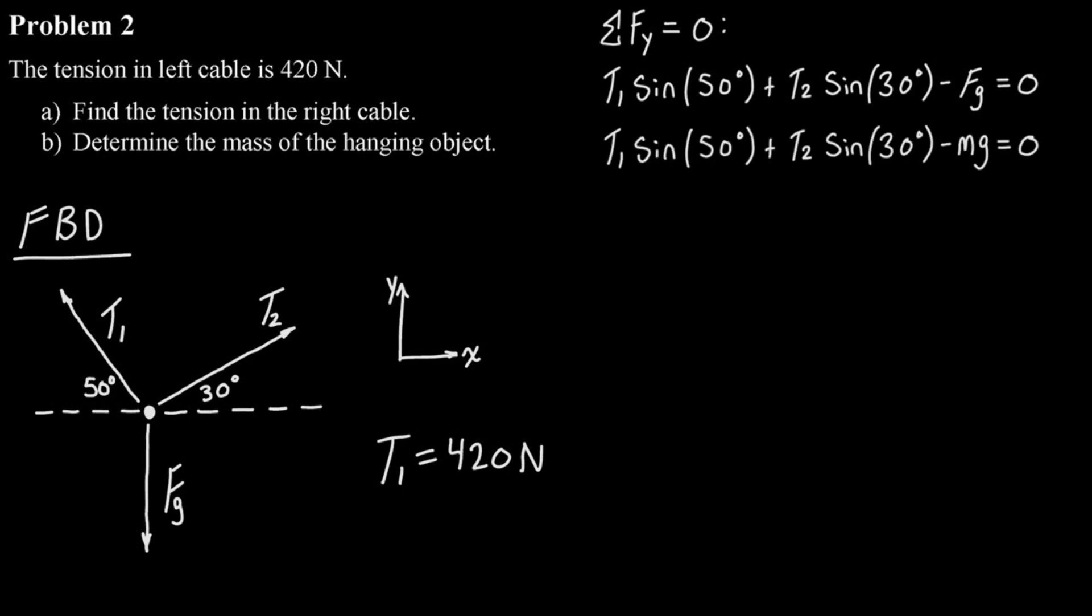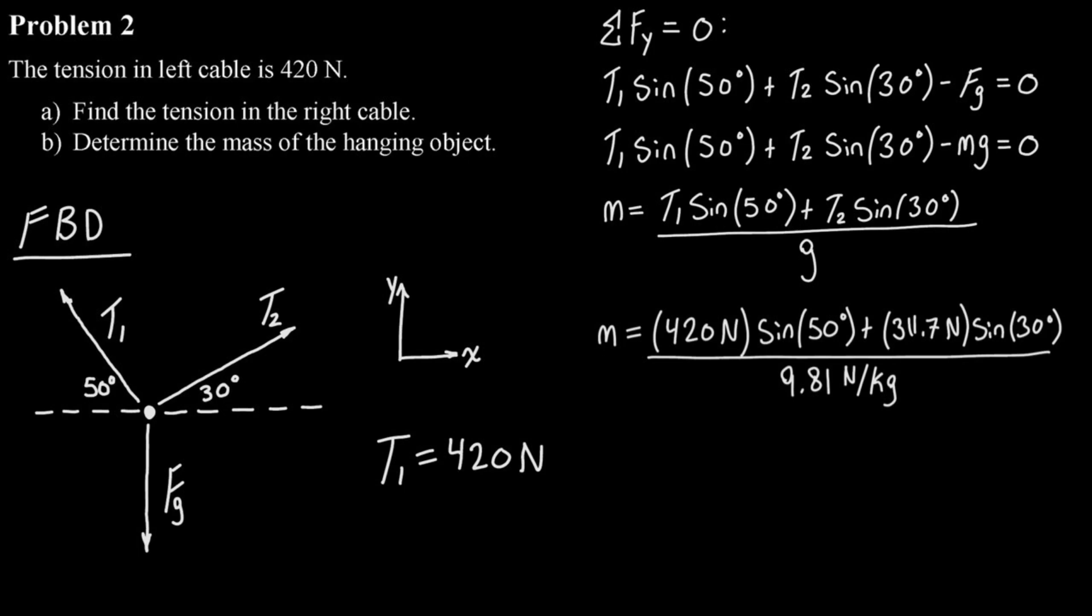Now the force of gravity can be replaced with m times g, where m is the mass of the object, and g is just going to be a constant, 9.81 newtons per kilogram. So once we have that, then we can rearrange our equation for the mass, plug in our numbers, and we end up with a mass of 48.7 kilograms.